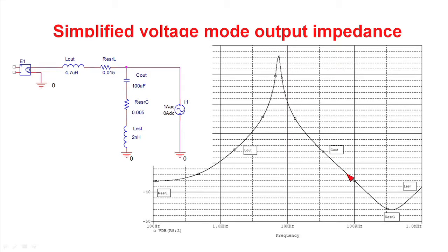As we continue increasing the frequency of the injected signal, we actually hit a bottom — that's going to be established by the ESR of the output filter capacitor. Then the output impedance starts to increase again due to the ESL of the output filter capacitor.